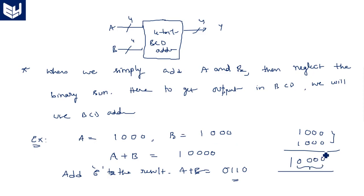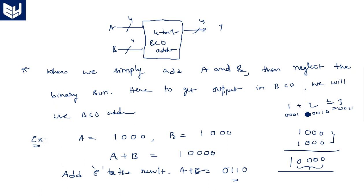After the first addition, we check whether the result is within the permissible limit — that is, it should not be greater than 9. If it is less than or equal to 9 and there is no carry, the result is fine. For example, taking 1 and 2: 0001 plus 0010 equals 3, result is 0011 — that's okay, no problem, no need for the second binary adder. But if the result is greater than 9 or a carry is generated, we have to add 6, so we need one more binary adder.